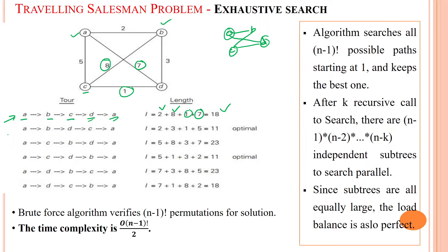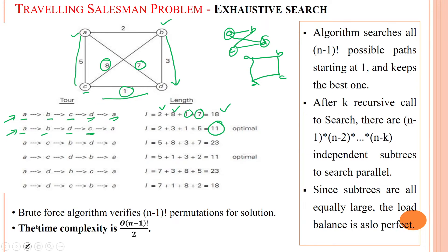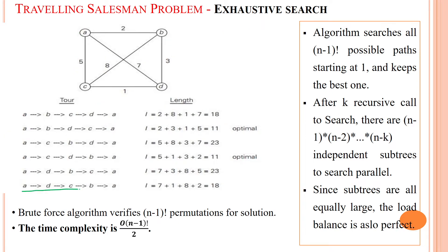The next possible solution is A to B, B to D, then D to C, then C to A — forming another cycle. In this path we get 11 as the optimal cost. Similarly, we try A to D (cost 7), then D to C (cost 1), C to B (cost 8), then B to A (cost 2), giving a total of 18. We have to try out all possible solutions like this.